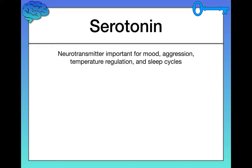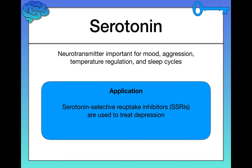Next, another very famous neurotransmitter important for many things, including depression: serotonin. This neurotransmitter is important for mood, aggression, and automatic functions like temperature regulation and sleep cycles. Thinking about depression, mood and sleep are very relevant, and so we've developed SSRIs — serotonin selective reuptake inhibitors — which are antidepressants used to treat depression. Reuptake inhibition is a concept I'll explain in just a moment.